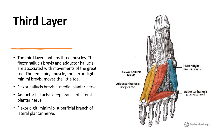The third layer has three muscles: adductor hallucis, flexor hallucis brevis, and flexor digiti minimi brevis. Flexor hallucis brevis is innervated by the medial plantar nerve. Adductor hallucis and flexor digiti minimi are both innervated by the lateral plantar nerve — however, adductor hallucis is innervated by the deep branch of the lateral plantar nerve, while flexor digiti minimi brevis is innervated by the superficial branch of the lateral plantar nerve.